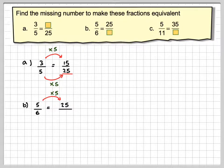We must do the same to the denominator. So 6 times 5 equals 30. Therefore, 5/6 is equivalent to 25/30.